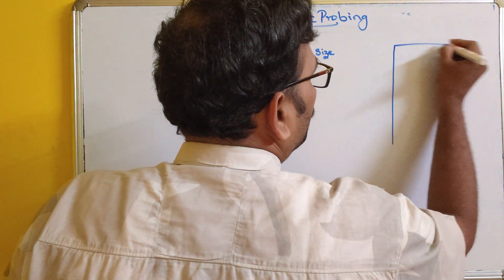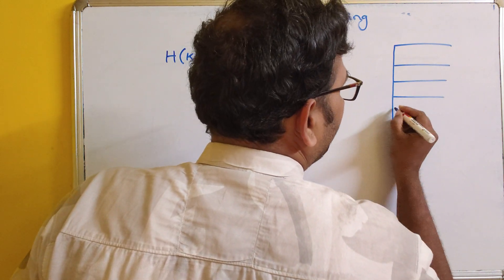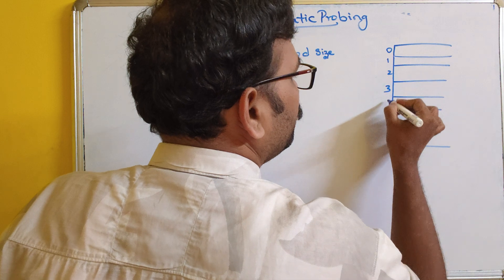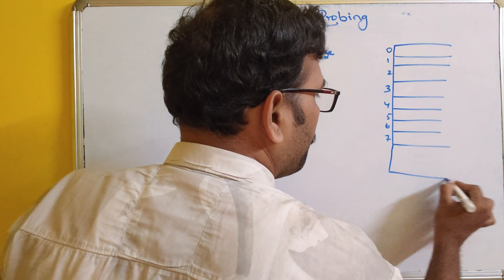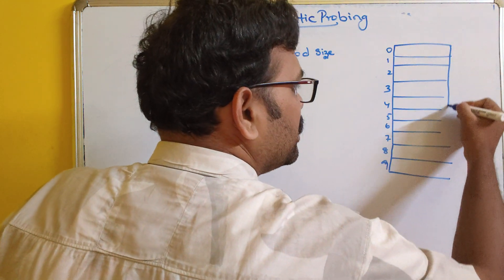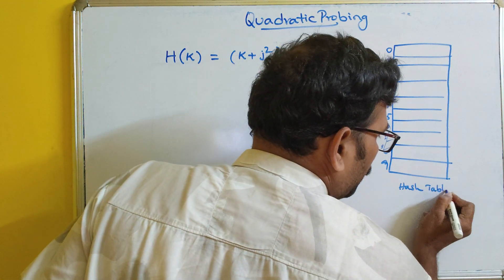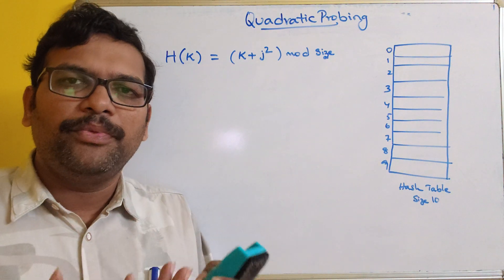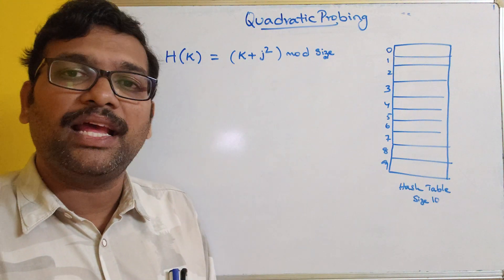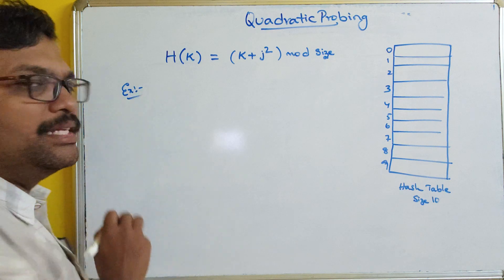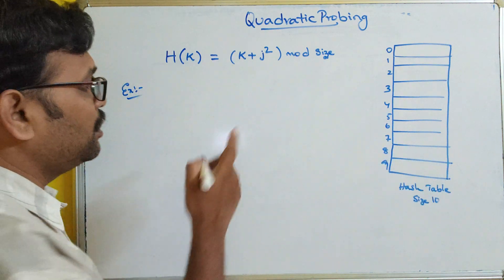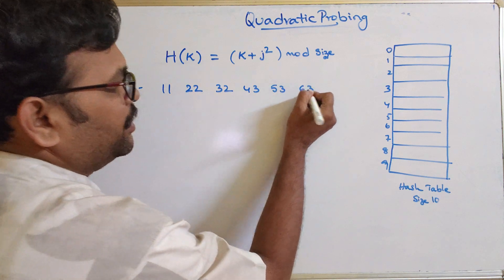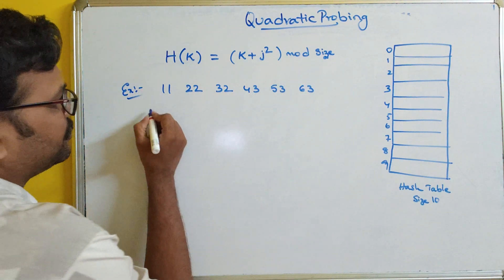Let us assume the same setup. We take a hash table of size 10, with indices 0 through 9. The values we want to store are: 11, 22, 32, 43, 53, and 63. We know the division method: h(k) = k mod size.